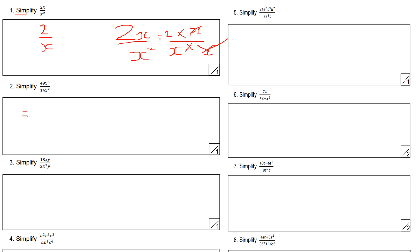Simplify 49x cubed all over 14x squared. Dividing top and bottom by 7, since 7 is the highest common factor of 49 and 14, gives 7 over 2. Then x cubed divided by x squared: subtracting the powers with the same base gives x to the power 1, or just x. So the answer is 7x over 2, which can also be written as seven-halves x.